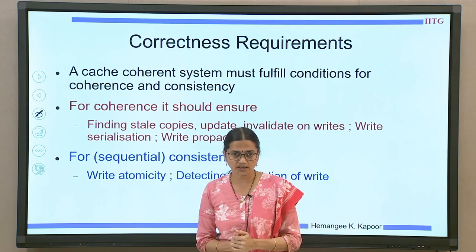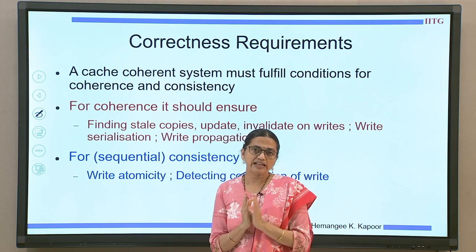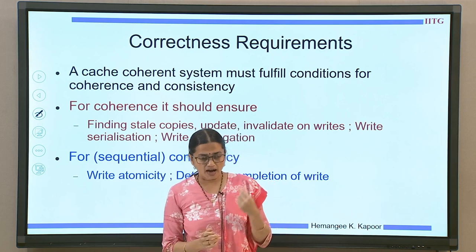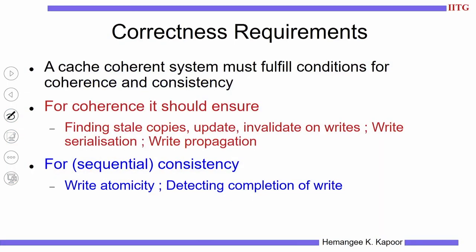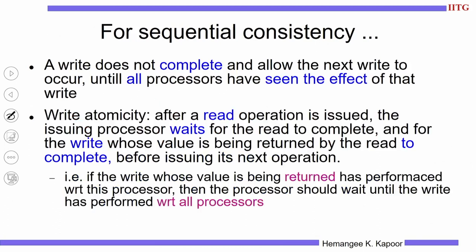We also have to guarantee sequential consistency, which we will cover in a different module. For now, we need to ensure two main properties for sequential consistency correctness: write atomicity and detecting the completion of a write. If we guarantee these two, the system is sequentially consistent. For coherence, all stale copies are identified and either invalidated or updated, and the write has been serialized and propagated.